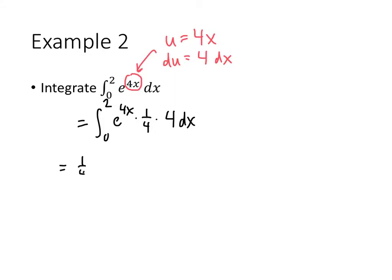We'll factor out that 1 fourth, and we get e to the 4x times 4 dx. Now we can convert this to a u integral. I'll come back to the bounds on the integral in just a second, but e to the 4x becomes e to the u, and 4 dx becomes du.